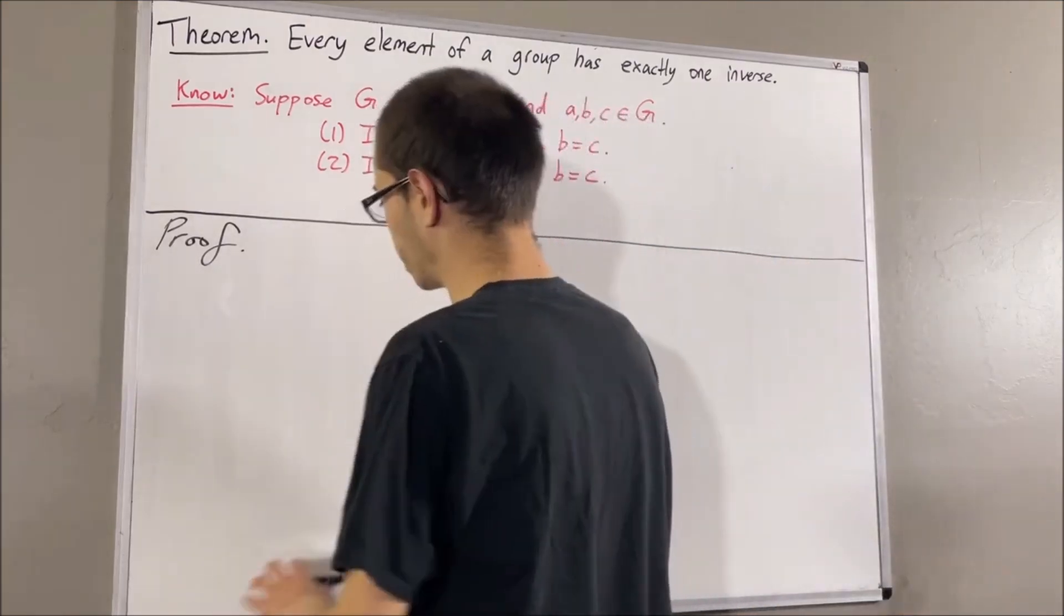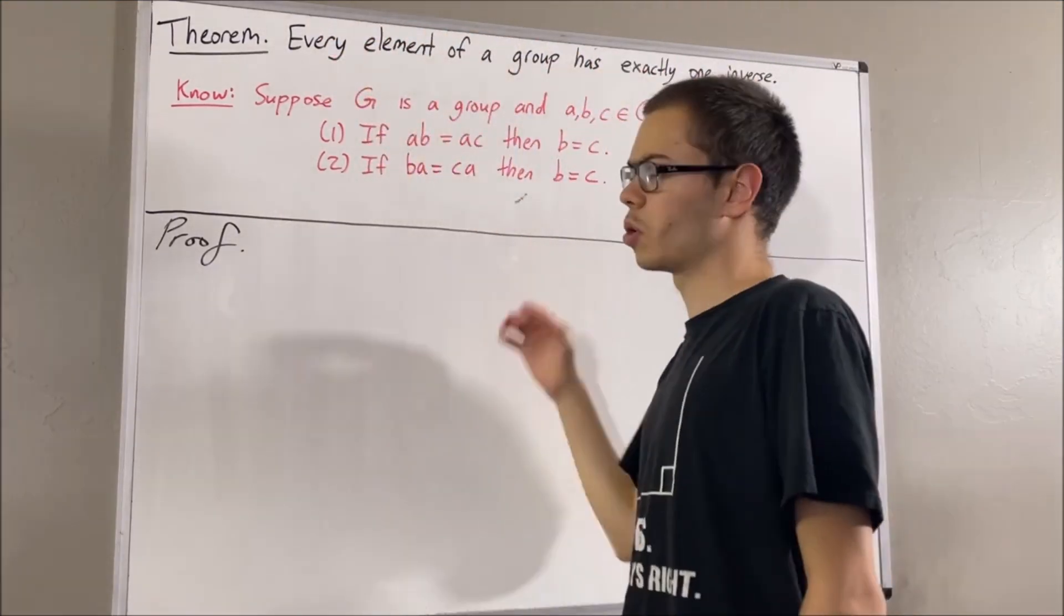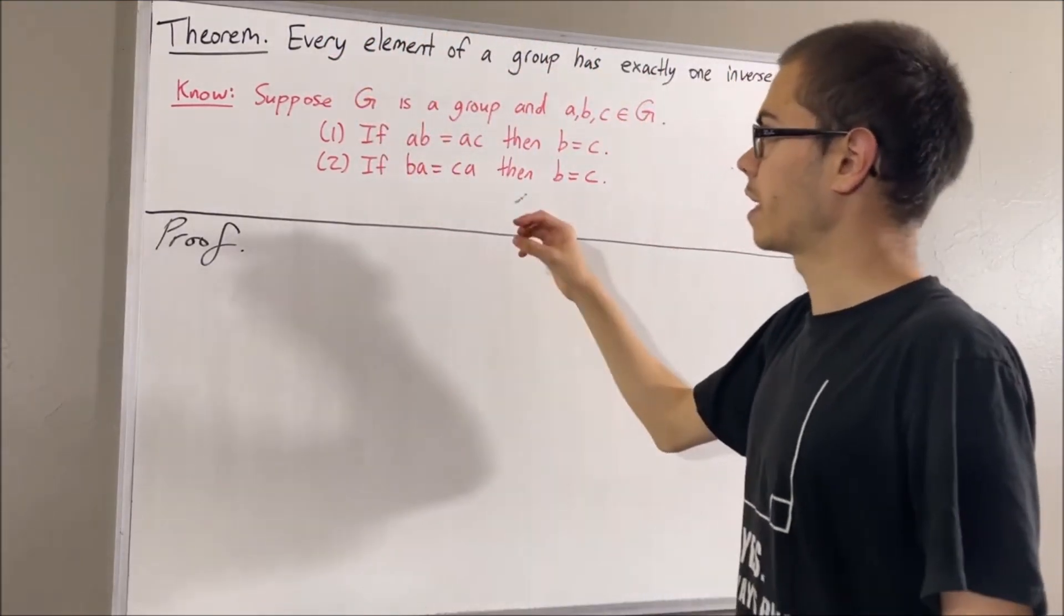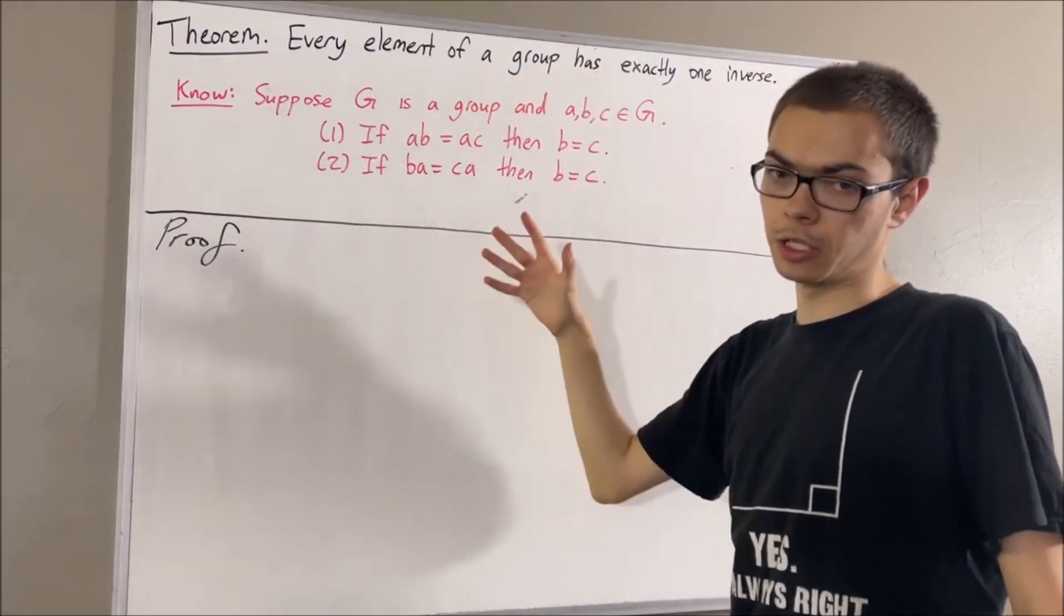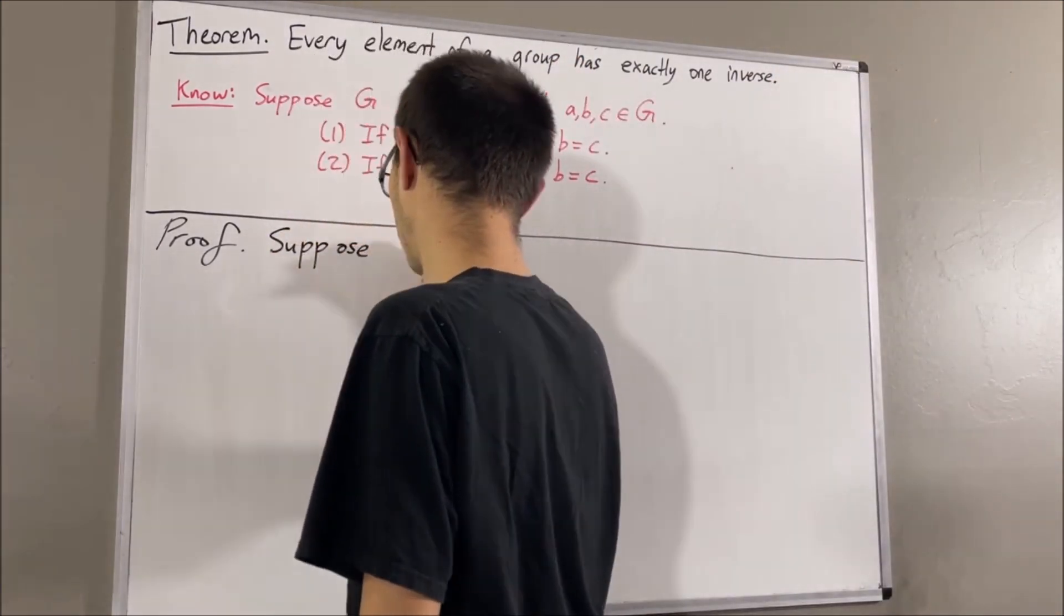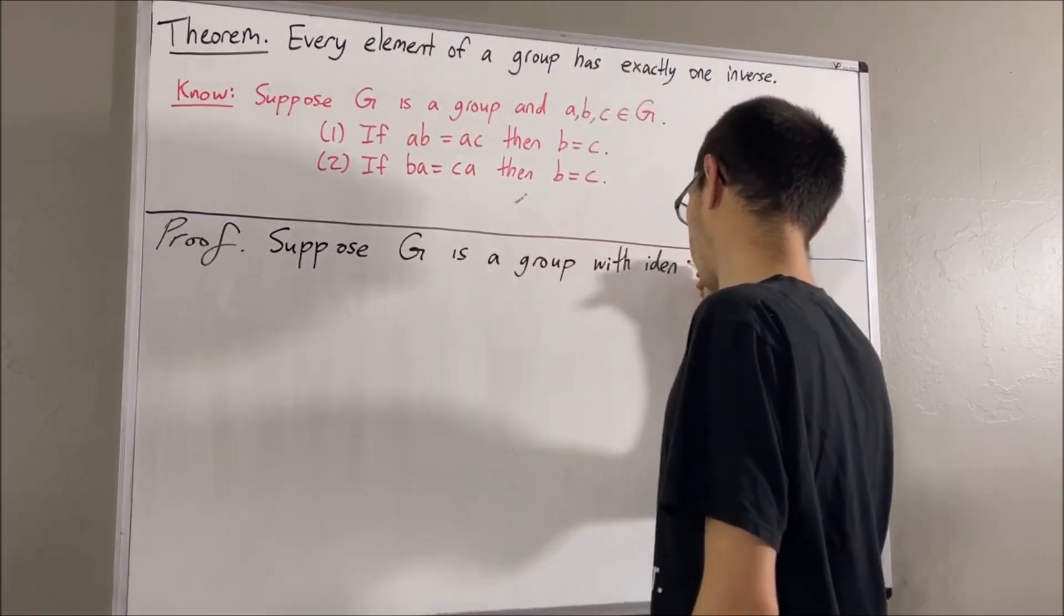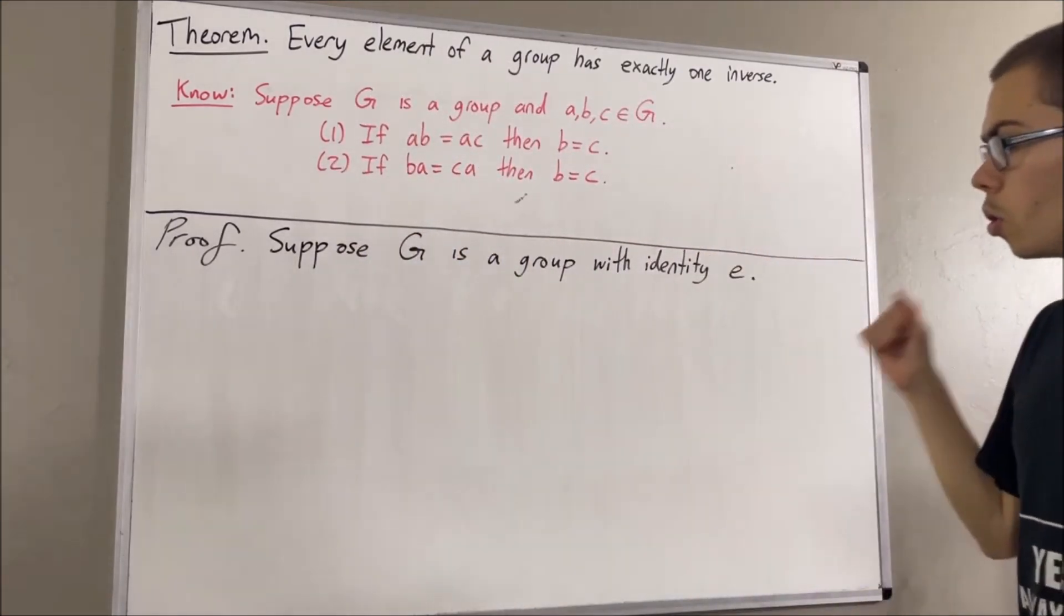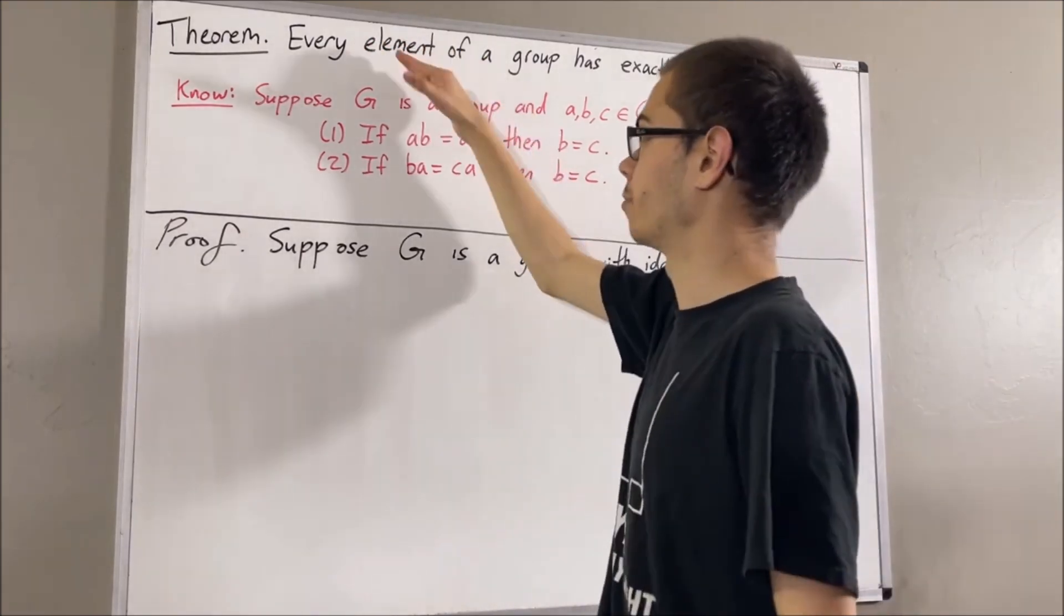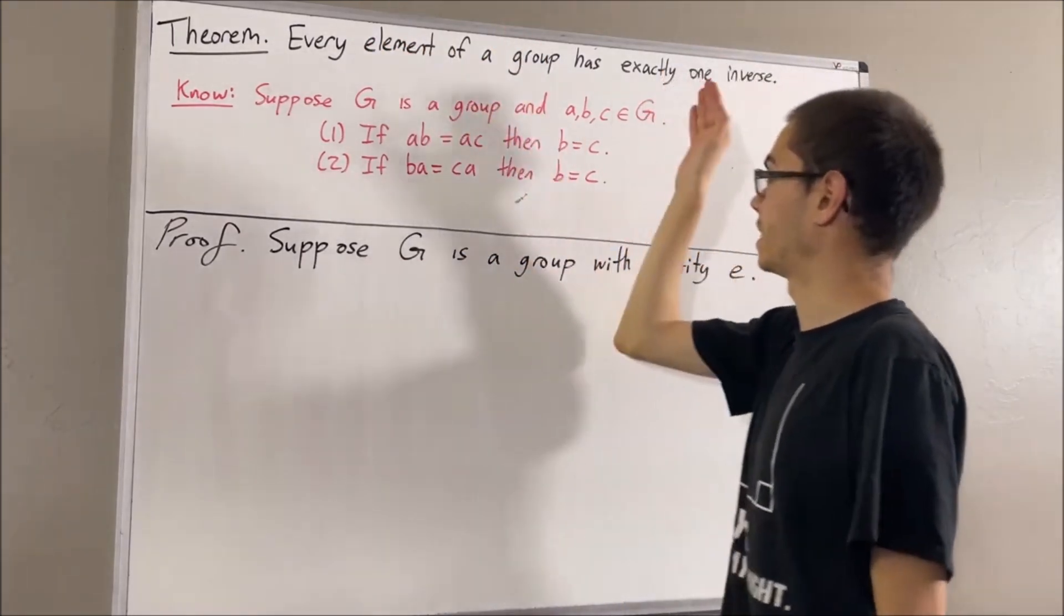Okay, so now let's get to proving this theorem. To start out the proof, let's say that we have a group G with identity e. The goal is to prove that every element of G has exactly one inverse.